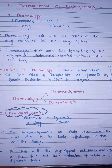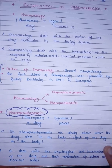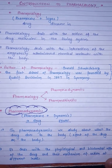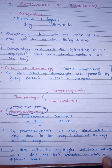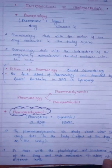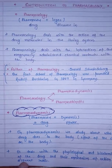In other words, in pharmacodynamics we deal with the physiological and biochemical effects of the drug and its mechanism of action at different levels — at the cellular level, at tissues, organs, and other different levels of the body.